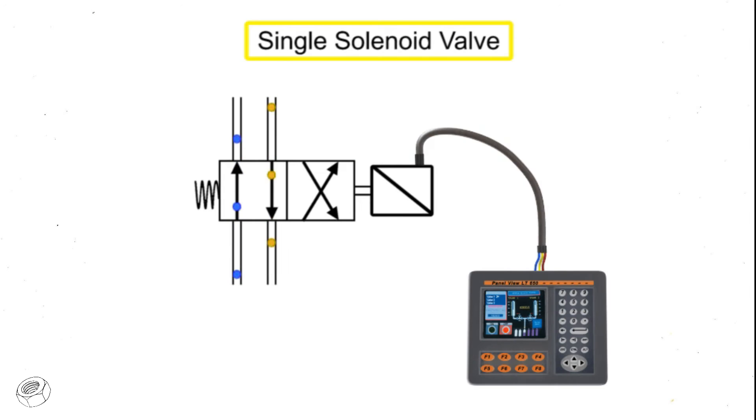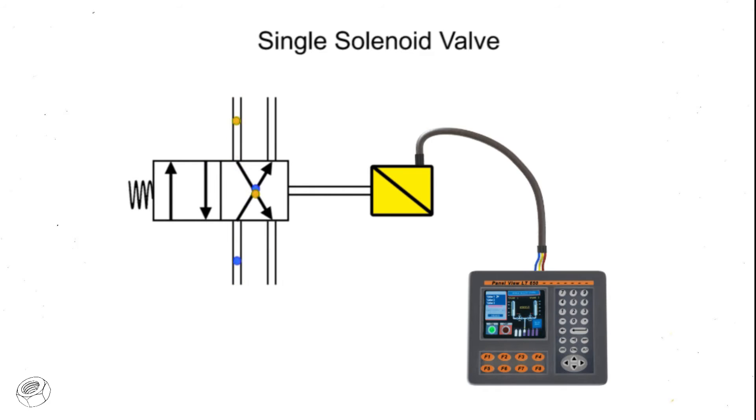A single solenoid valve has one solenoid to assist in valve operation. The valve spool shifts when the solenoid receives an electrical signal and is energized. The valve will remain shifted as long as electrical current is applied to the solenoid. Once the electrical current is removed and the solenoid is de-energized, the valve returns to its normal position by spring force. Fluid circuits designed to use single solenoid valves must maintain electrical current in order to keep the valve in its shifted position.